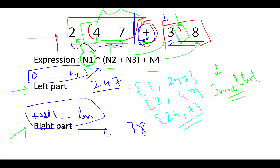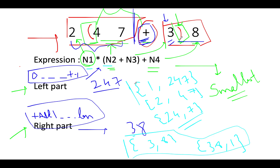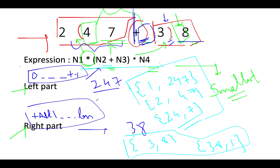For the right part, in the first possibility you can have N3=3 and N4=8. In the second possibility, N3=38 and N4=1. These are all possible permutations for the right and left parts. You then use the expression N1 × (N2 + N3) × N4 to derive the smallest possible value. Let's walk through the coding section and follow exactly these same steps — it's a game of pointers.